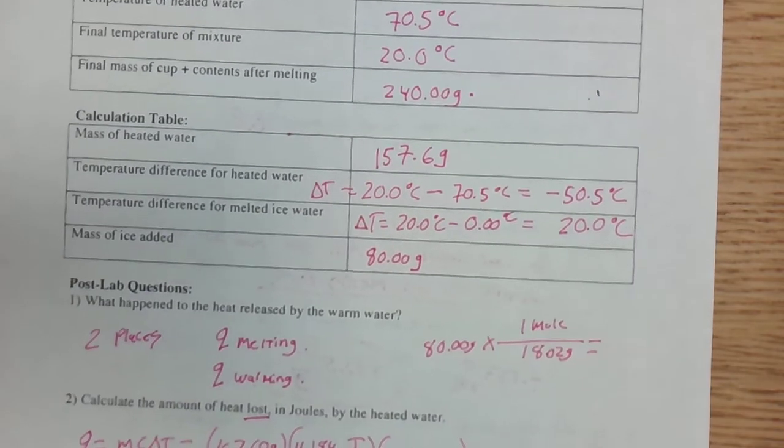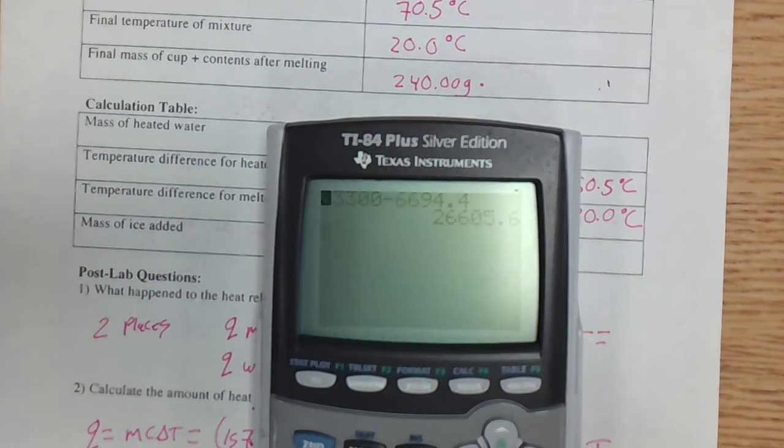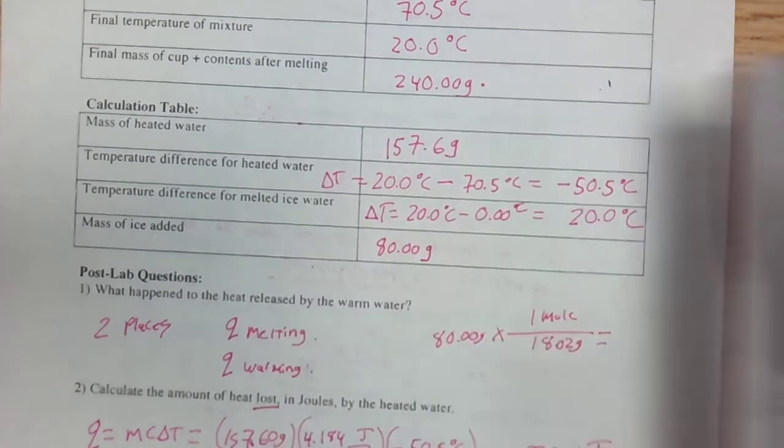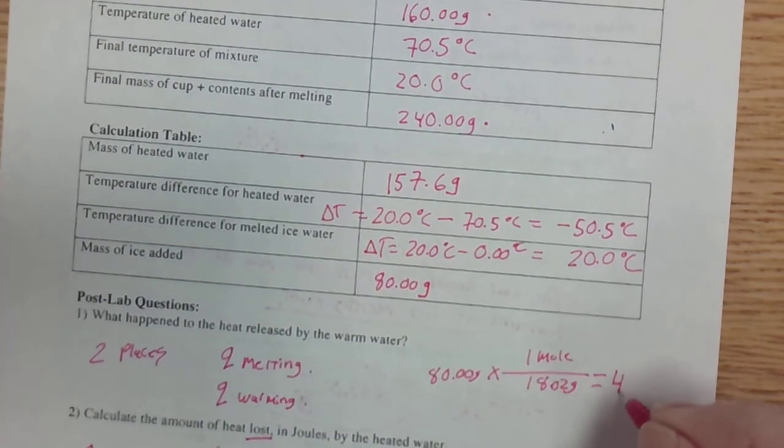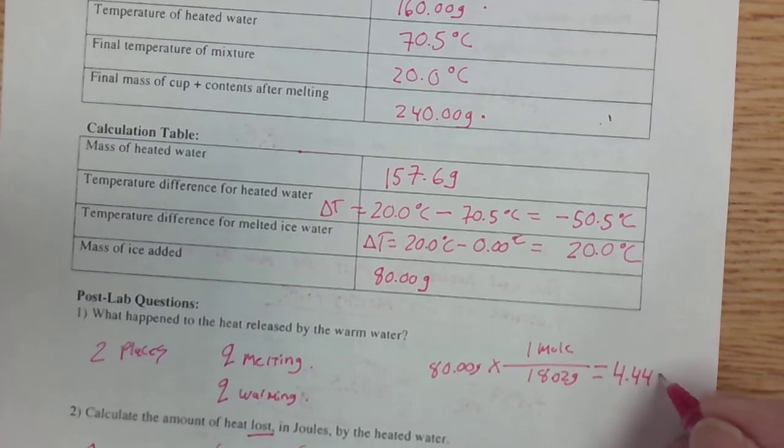And then we can say equals 80 divided by 18.02. And I get 4.44, we'll call it, 4.44 moles.